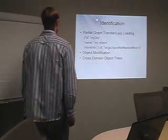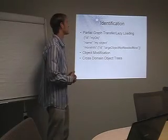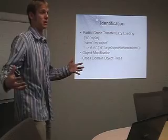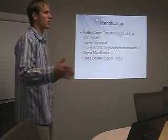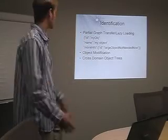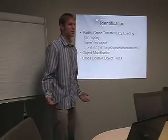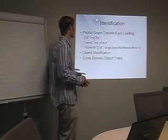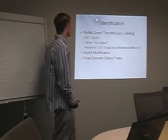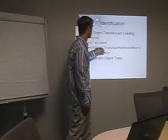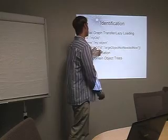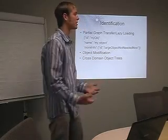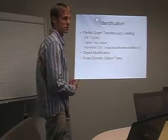Another thing you can do with identification objects is lazy loading — a really important feature when dealing with large persistent object graphs. If you have a huge list of data or a relational database where objects reference objects with large pieces of data, especially on the web, you don't want huge chunks of data passed to the browser. So this allows lazy loading to be part of the protocol. For example, an object called MyObject refers to a 'large object not needed now' but doesn't provide the definition — implicitly referring to an object not yet loaded. The client can later decide it needs that object and request it from the server.